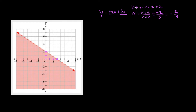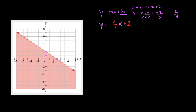We found b and we found m, so let's plug them in. This is going to be y is equal to negative two-thirds times x, plus positive two. So the equation of this line is y is equal to negative two-thirds x plus two.